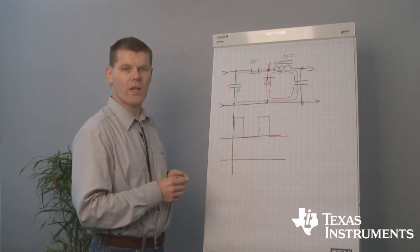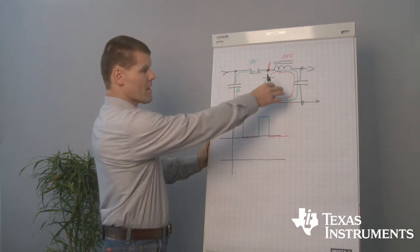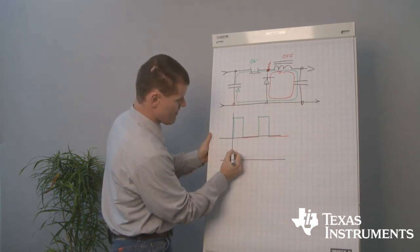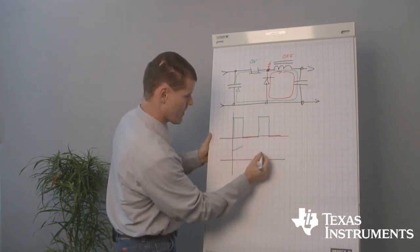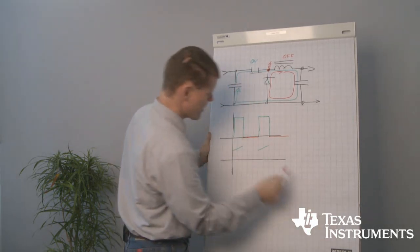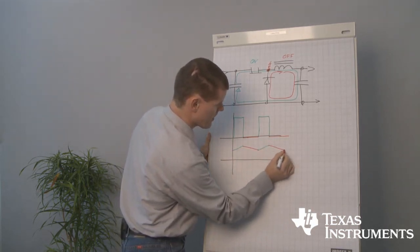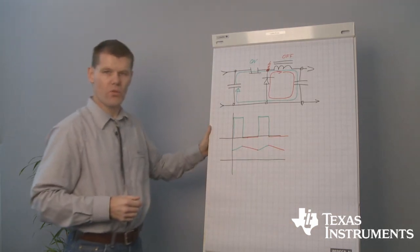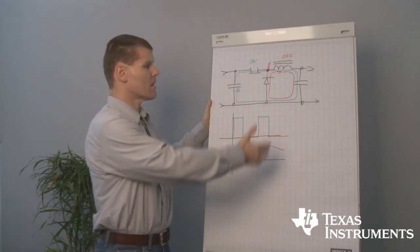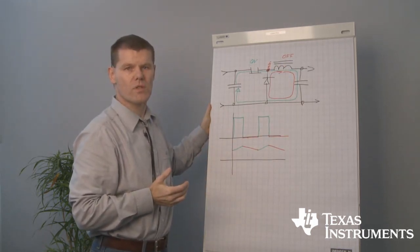But how are the related currents looking? Very easy. We got a slope at the current caused by the inductance and inductance law. And the current will roughly look like this. And we are in a continuous mode, a so-called continuous conduction mode, because the current inside the inductor never drops to zero.